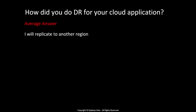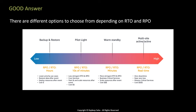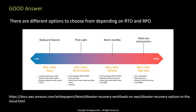Moving on to question two: how did you do disaster recovery for your cloud application? One common answer is: I will just replicate everything to another region. This is a very blanket statement. A good answer will be: there are different options to choose from depending on RTO and RPO of your application. If you don't know what RTO and RPO are, please look them up. There are four different disaster recovery strategies: backup and restore, pilot light, warm standby, and multi-site active-active. The replication answer corresponds to multi-site active-active.